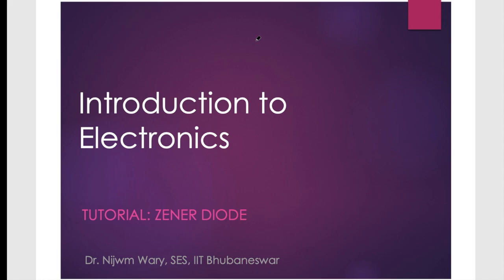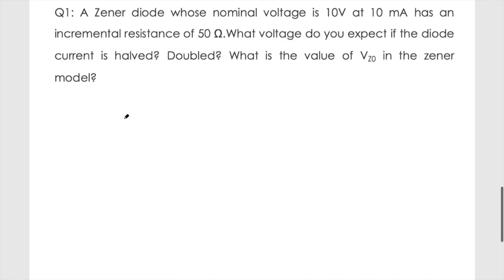This is a tutorial session on the Zener diode, where we will solve three problems on Zener diode voltage regulation. The first problem: a Zener diode with a nominal voltage of 10 volts at 10 milliampere has an incremental resistance of 50 ohms. What voltage do you expect if the diode current is half or double compared to the nominal current? And what is the value of vz0 in the Zener diode model?